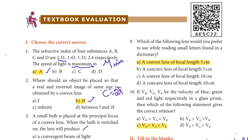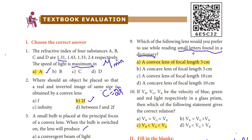Ninth question: Which of the following lenses would you prefer to use while reading small letters found in a dictionary? To read small letters, we need to magnify them. A convex lens of focal length 5cm provides the best magnification for this purpose. So option A is the right answer.